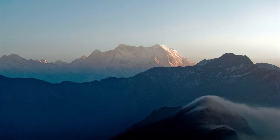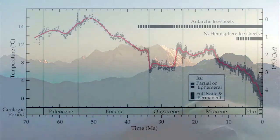Moreover, higher elevations accumulate ice and snow that increases Earth's albedo, the reflectance of solar energy. For these reasons, times of relatively rapid mountain building — say 40 million years ago when the Himalayas and Sierra Nevadas first arose — are usually cooler periods.